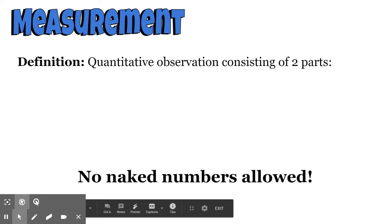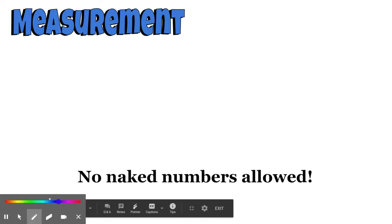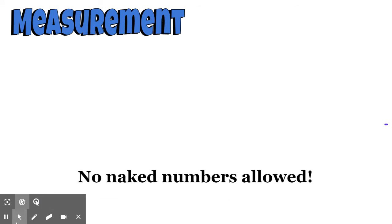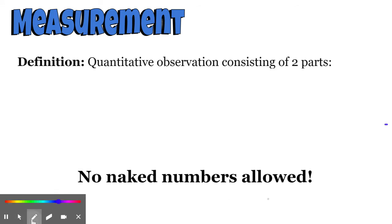The word quantitative tells us there's going to be some sort of quantity. Quantitative means quantity, so there's going to be some sort of number associated with these different things, whatever the observation is.